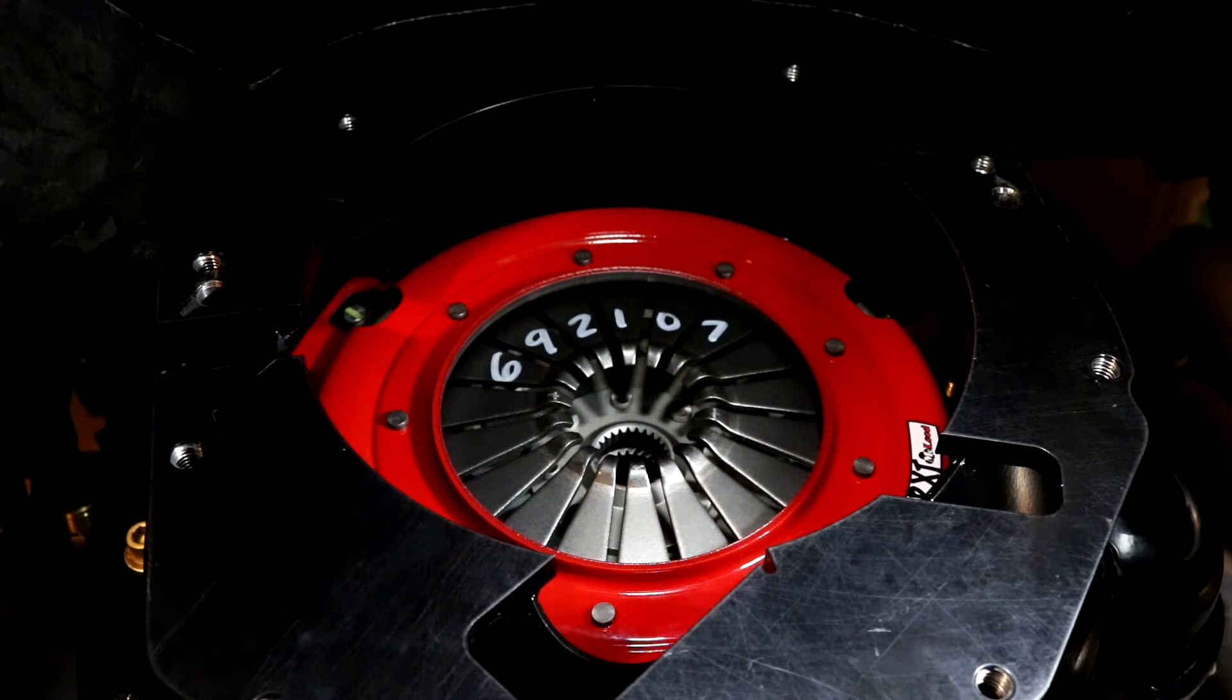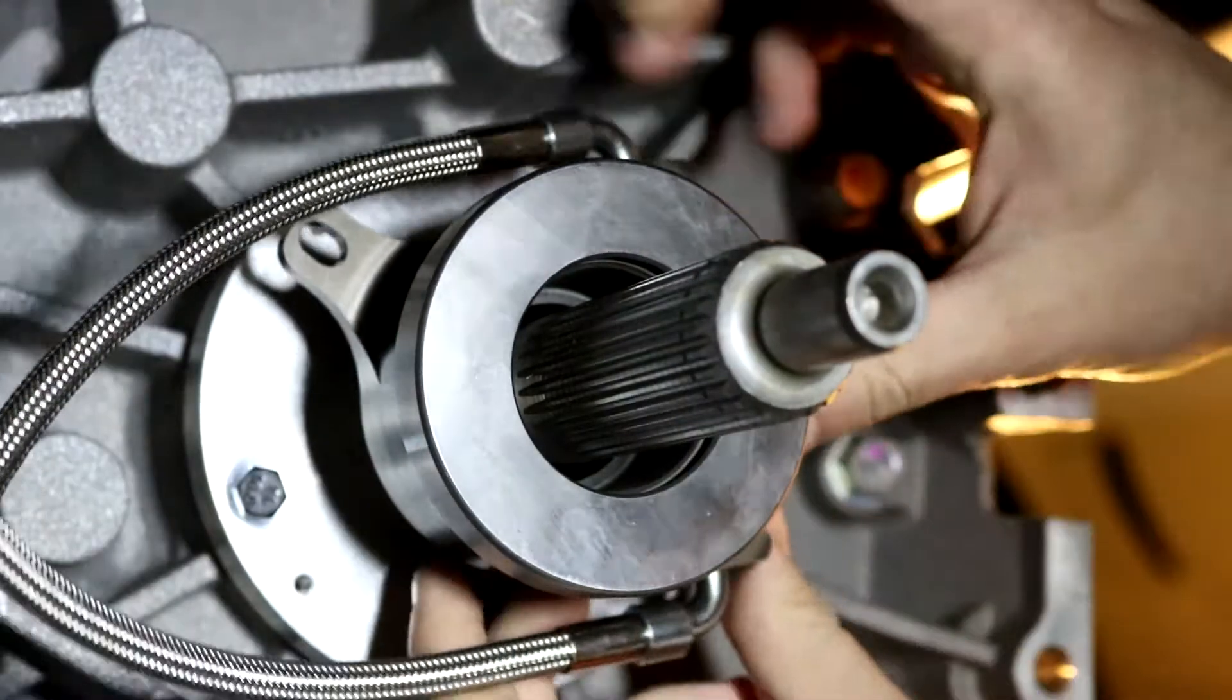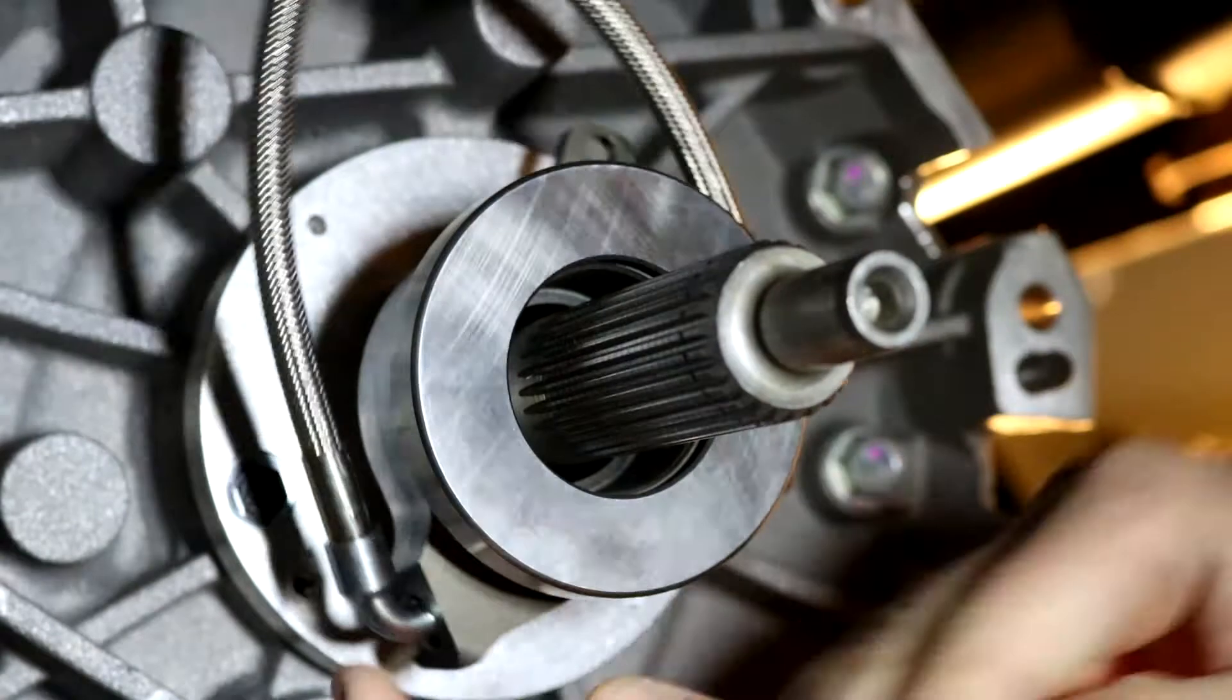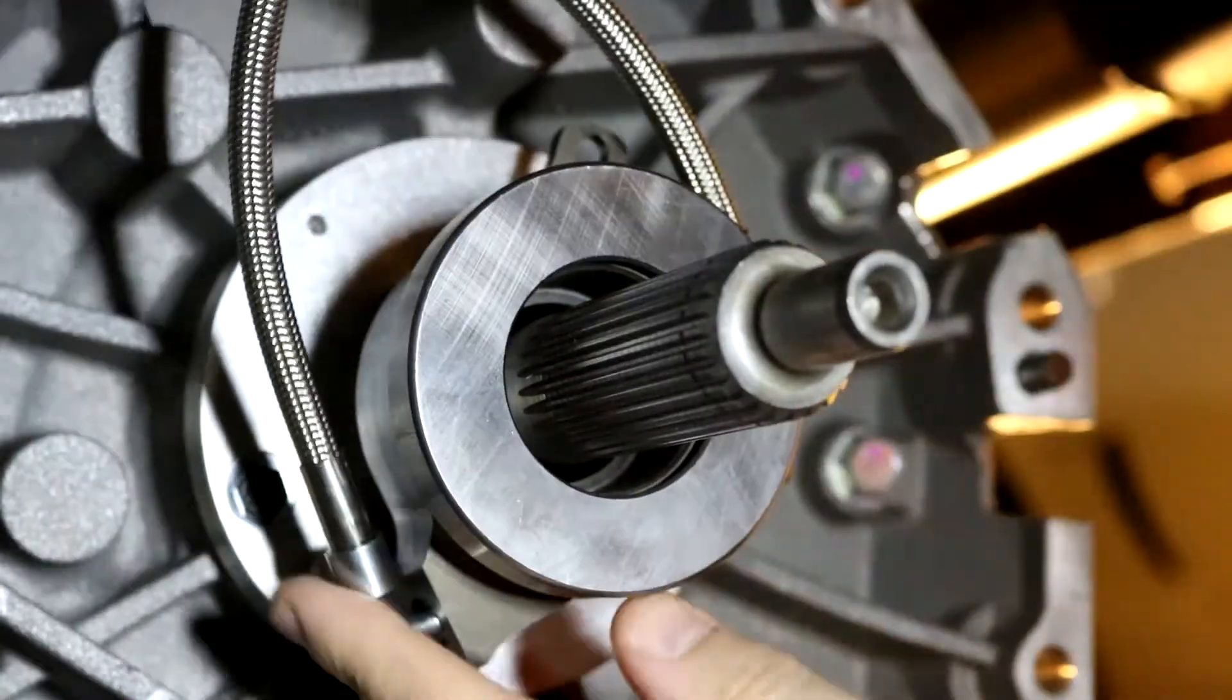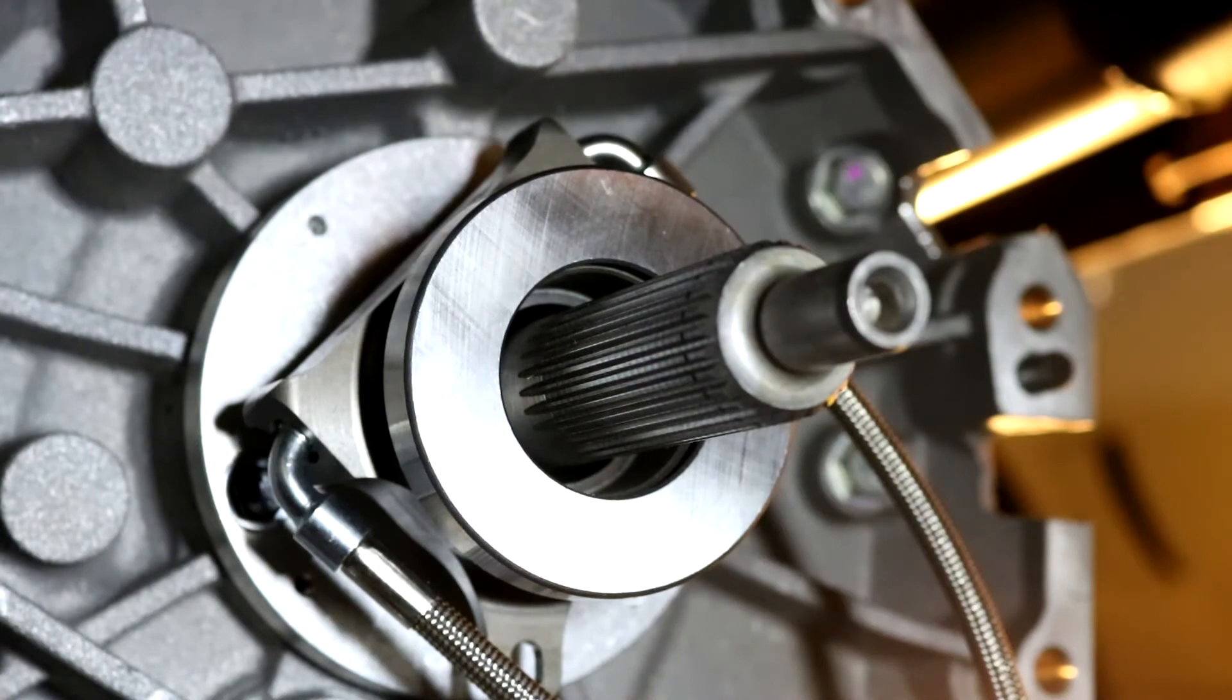To install the release bearing to the install height, all we have to do is just spin it onto the collar until we get to the correct depth. I'll use my straight edge.